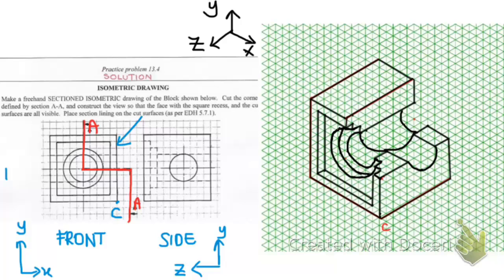So there will be one more curve that will be visible and it will show up as a straight line adjoining to this corner since we are viewing it straight on. And the last thing to do would be to add the section lining on the cut surfaces. And there you have the final drawing for practice problem 13.4.